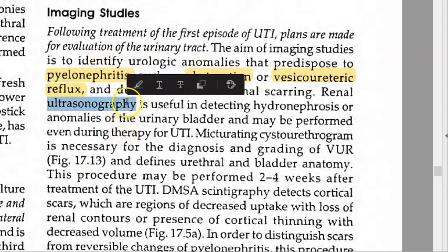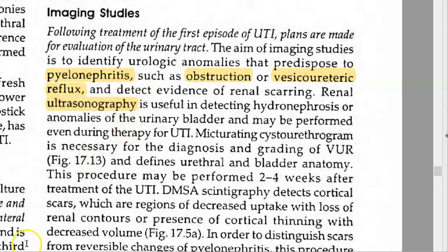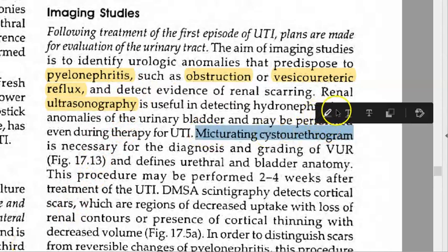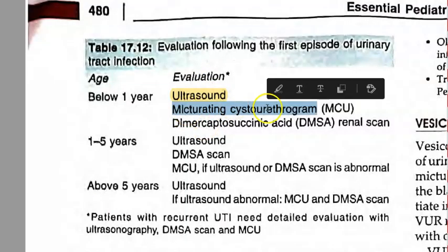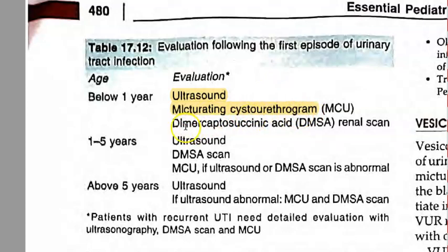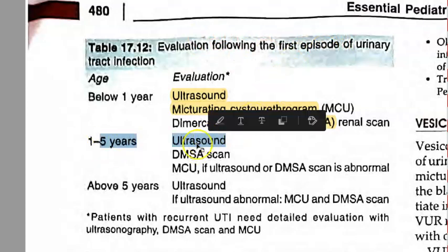You'll do an ultrasound. You can also do a micturating cystourethrogram (MCU). Here, they've nicely given ultrasound, micturating cystourethrogram where you take x-ray as the patient is voiding. Then DMSA renal scan—dimercaptosuccinic acid renal scan. You have to do a kidney scan, especially after the first episode, to check for congenital anomalies.